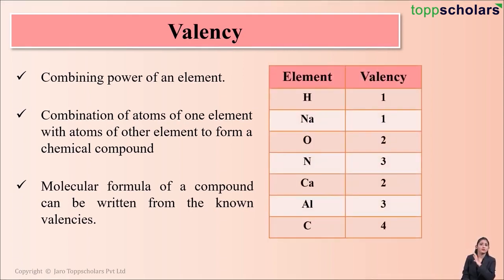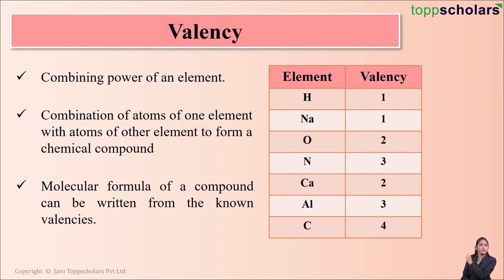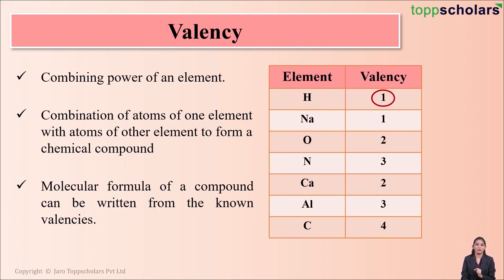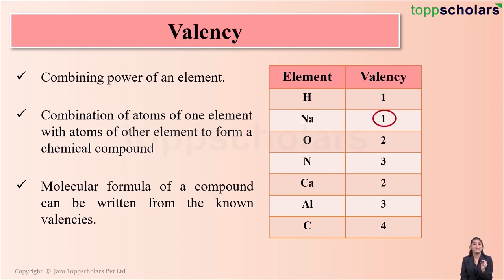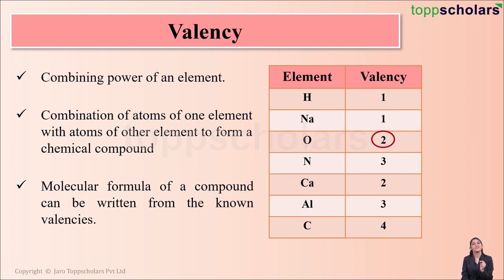Let us have a look at the valency of some elements. In the first column, you can see the symbols of the elements, and in the second column, we have the valency of these elements. Hydrogen has the symbol H and a valency of 1. Sodium has the symbol Na and a valency of 1. Oxygen is represented by the symbol O and has a valency of 2.